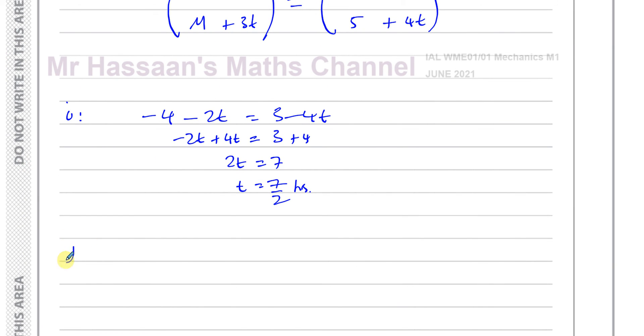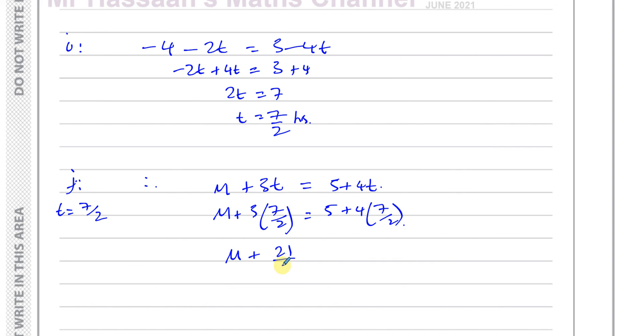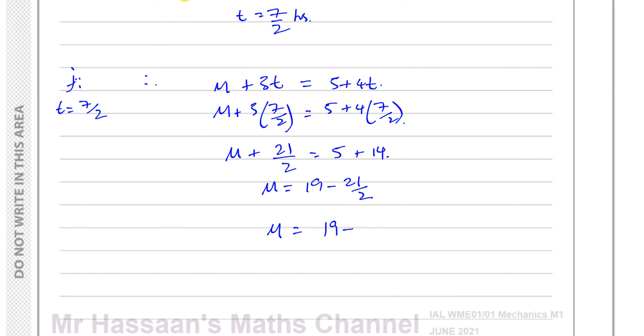So now we can find mu using the j components and the fact that t equals 7 over 2. So mu plus 3t equals 5 plus 4t. We know t is 7 over 2, so mu plus 3 times 7 over 2 equals 5 plus 4 times 7 over 2. So mu plus 21 over 2 equals 5 plus 14. So mu equals 19 minus 21 over 2, which is 38 over 2 minus 21 over 2, giving 17 over 2. Therefore mu equals 8.5.